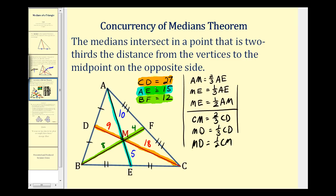And let's go ahead and take a look at the last median, in green, BF. BM will be two-thirds BF, so MF will be equal to one-third BF. And then finally, MF will be one-half of BM.